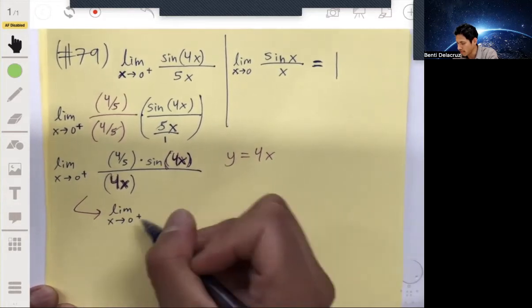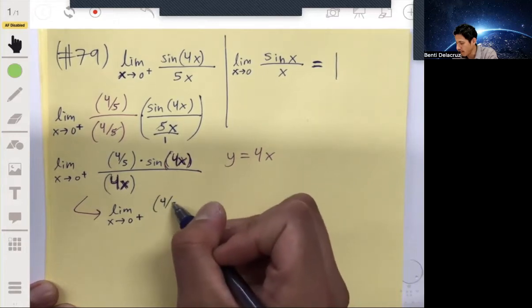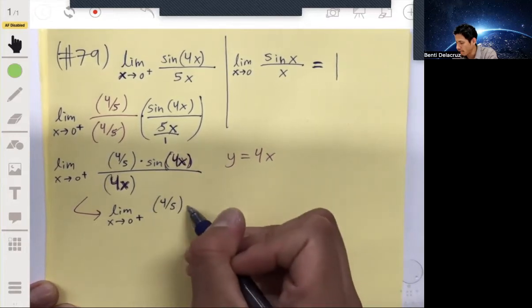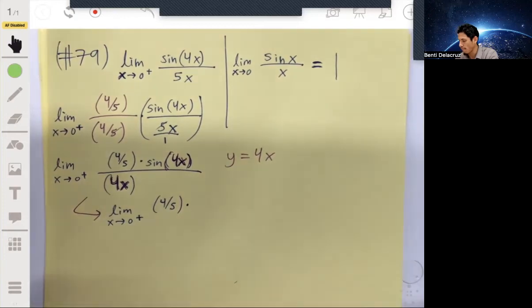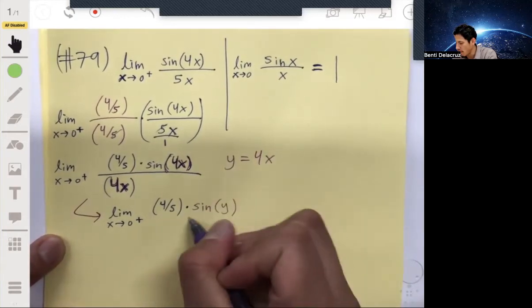From the positive side of four-fifths times sin(y) over y. Remember the four-fifths, you could rewrite that separately.